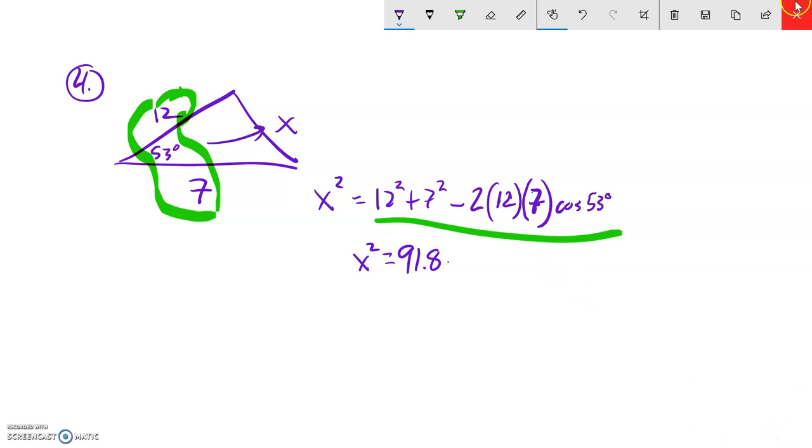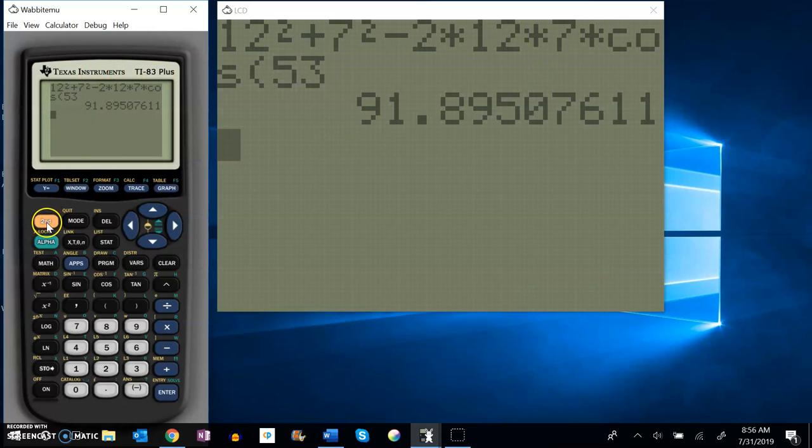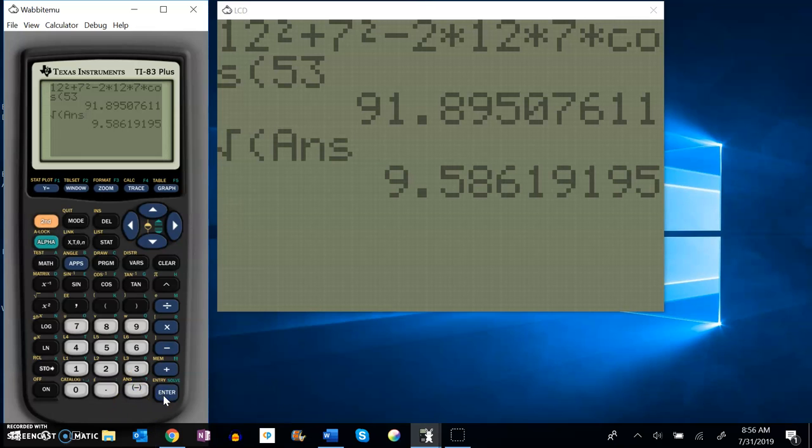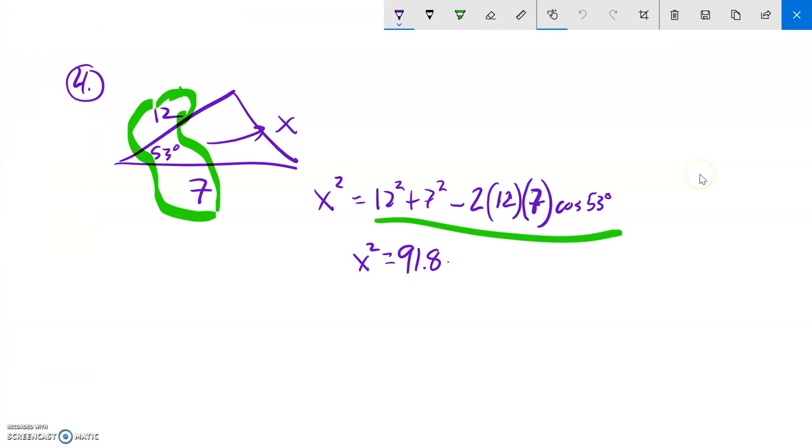So I need to square root that to get my answer. It's still in my calculator, so let me square root the answer, square root the thing I just got. So my answer should be about 9.59, and there it is rounded to two decimal places.